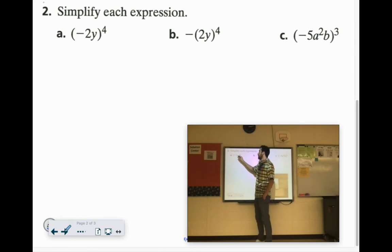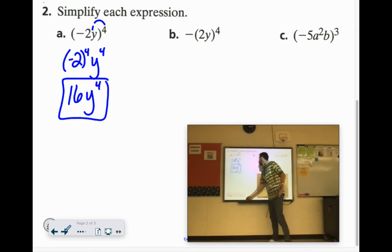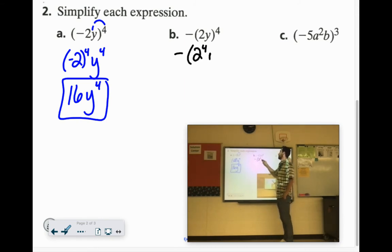So negative 2 will be negative 2 raised to the 4th power. So it's an even exponent, it will come out positive. We'll also have y to the 4th. So we know it's coming out positive. 2 times 2 is 4, times 2 is 8, times 2 is 16. So positive 16, y to the 4th. Over here, we have the opposite of 2 to the 4th, y to the 4th. We know 2 to the 4th is 16, so this will come out to negative 16, y to the 4th.